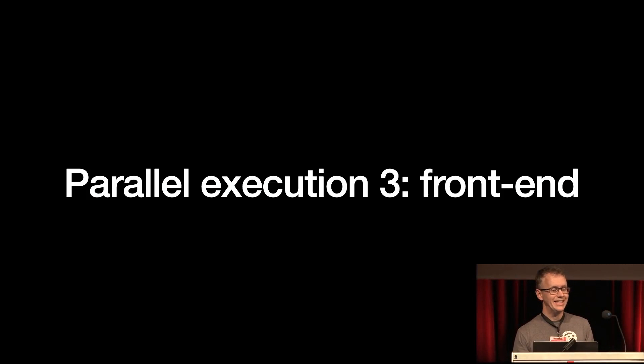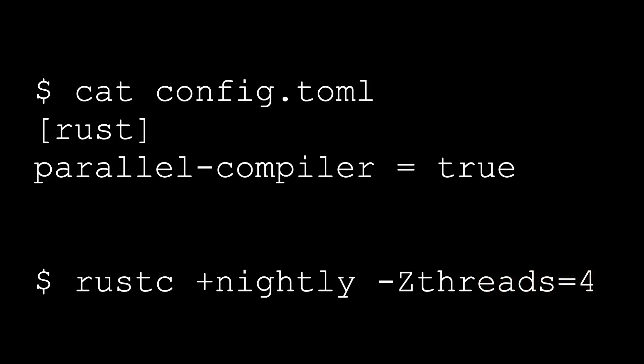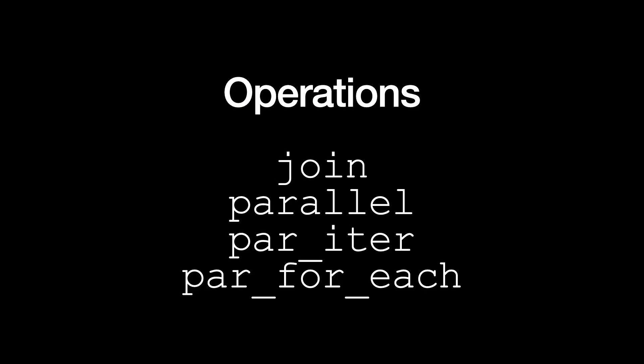Code for a parallel front end has actually existed for several years — much of it written by a contributor named zoxc. The code uses Rayon to produce very fine-grained parallel execution. But the Rust compiler that ships today does not have this parallel front end built in. If you want to use it, you must build the compiler yourself with a special flag in config.toml, and even then the front end runs single-threaded by default. You need the -Z threads flag to turn on multithreading. The compiler has an internal crate defining operations like join, parallel, par_iter, and par_for_each. In the parallel front end these use Rayon; in the serial front end they degenerate to serial execution. These operations are used at key places in the compiler where parallelism is available.